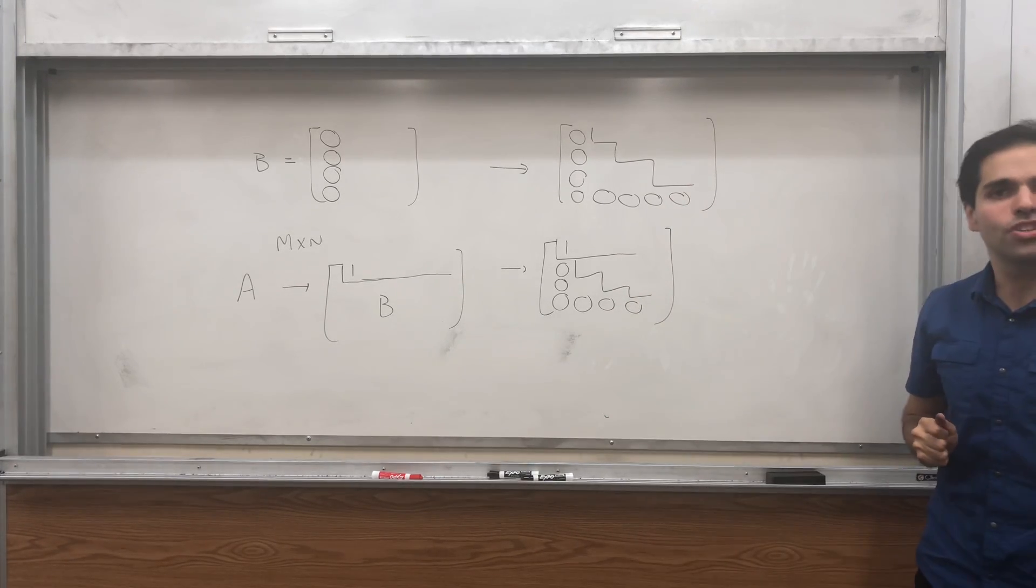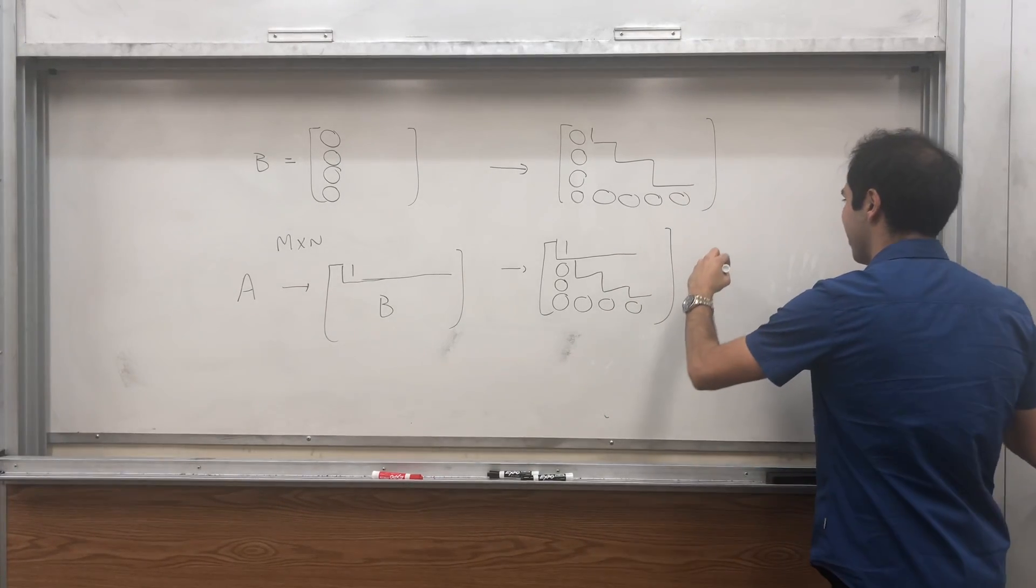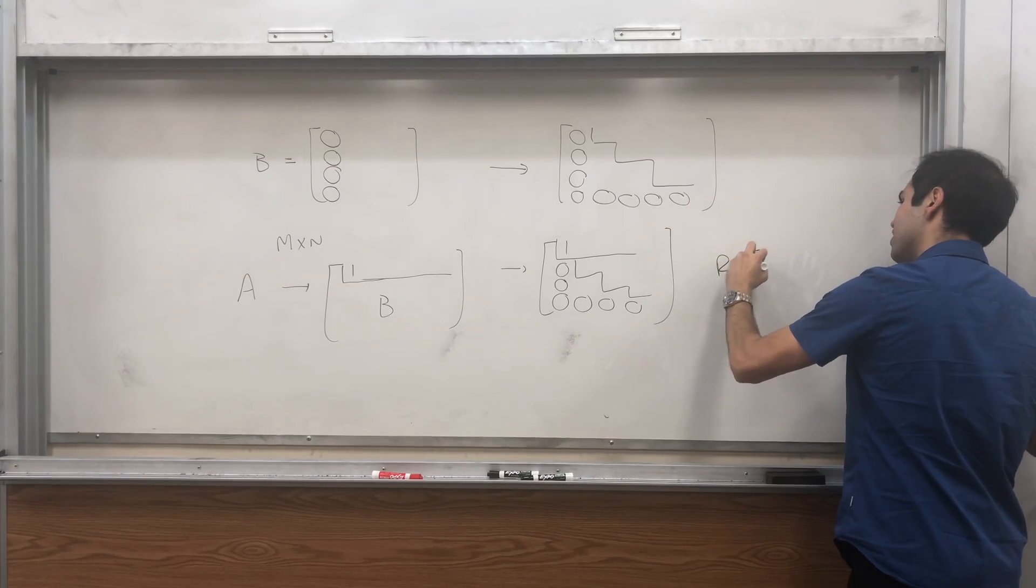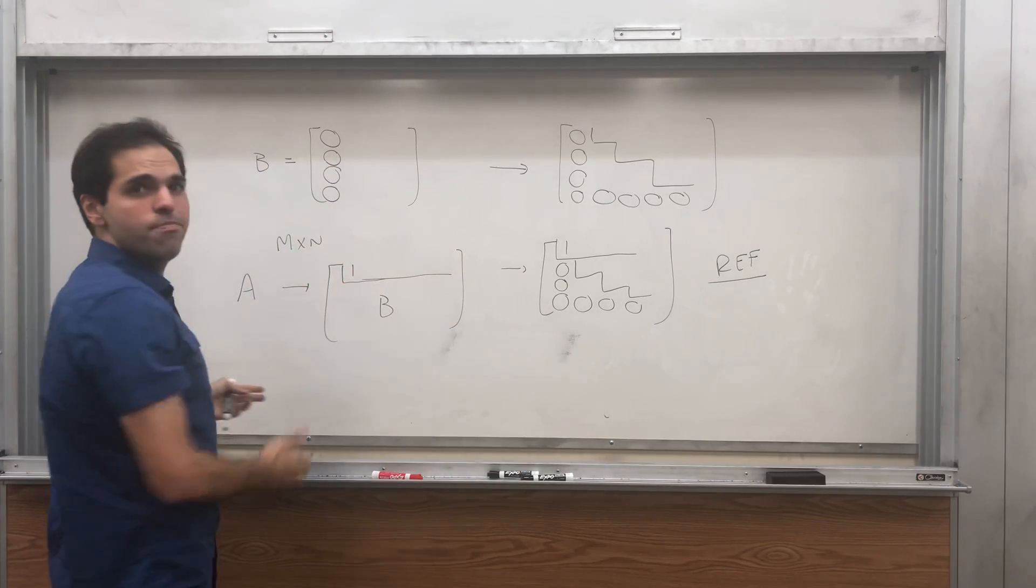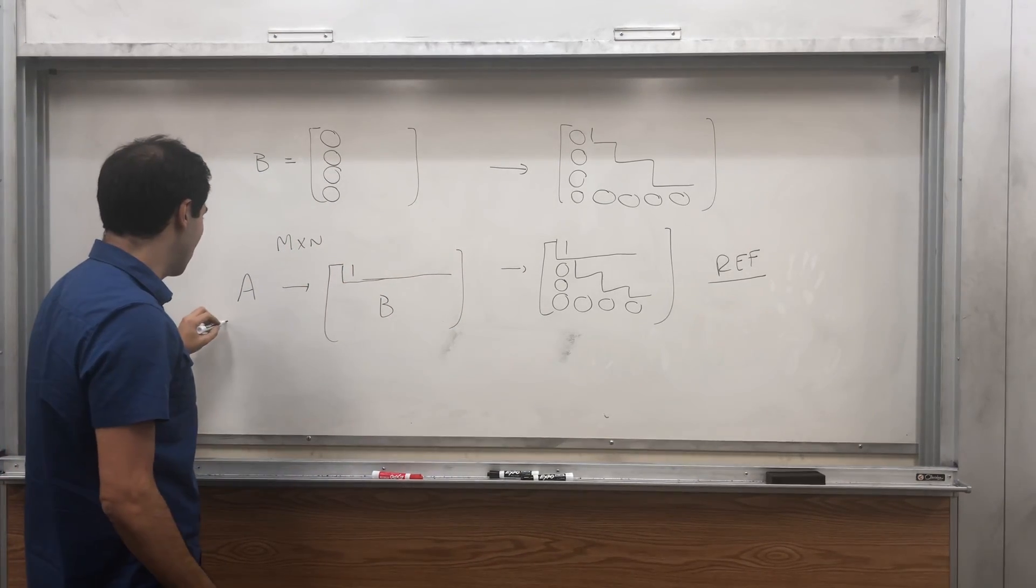So this is in row echelon form, and we're kind of done. Now, just one more objection, you might be like, but not every matrix has this form in row echelon form.